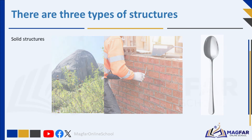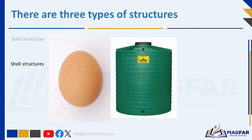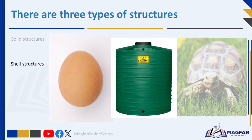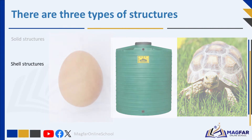Mountains, caves and coral reefs are natural mass structures. Sand castles, dams and brick walls are manufactured mass structures. Shell structures are structures that contain or protect things from the outside and are usually hollow inside. A shell structure is more enclosing than a frame structure — it surrounds and encloses something. Bottles, pots and water tanks are hollow objects that can also be called shells.